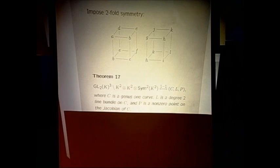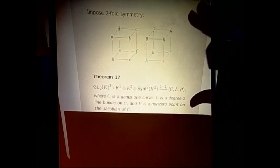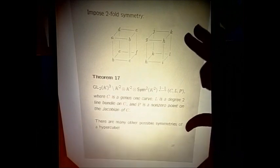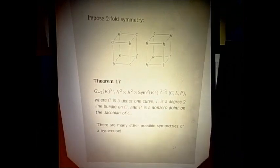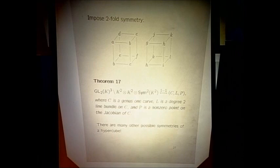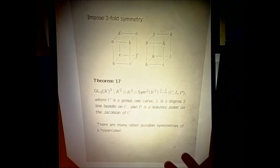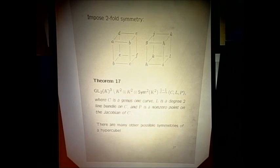So you can parametrize genus one curves with two points on the Jacobian, or with one point on the Jacobian. As I'll talk about tomorrow, that's very useful — you can decide how many marked points you want on your Jacobian. You can get any non-zero point on the Jacobian.